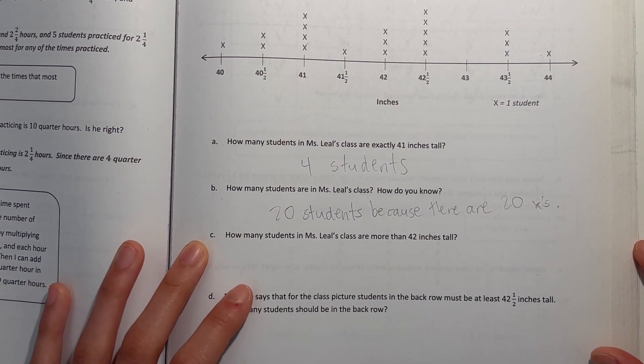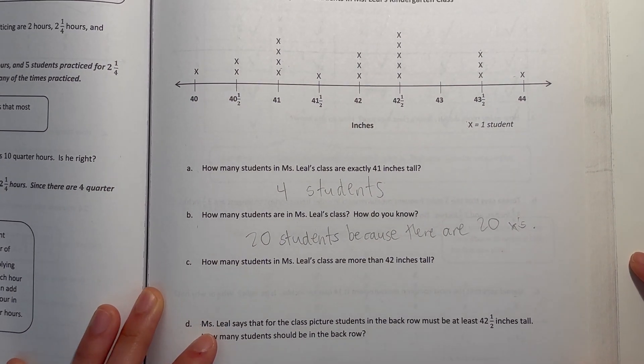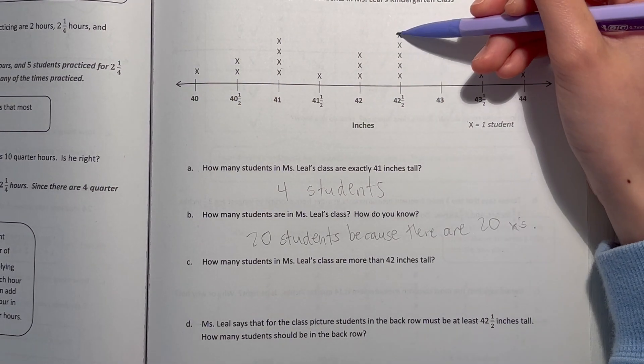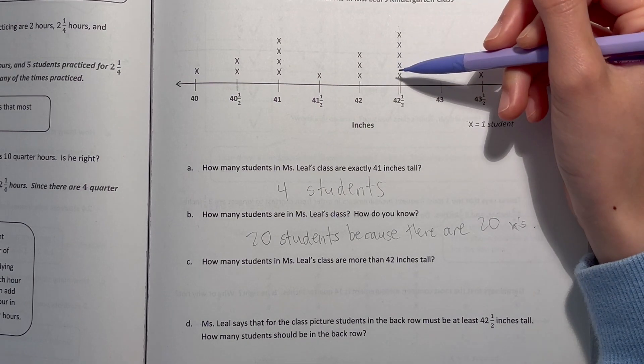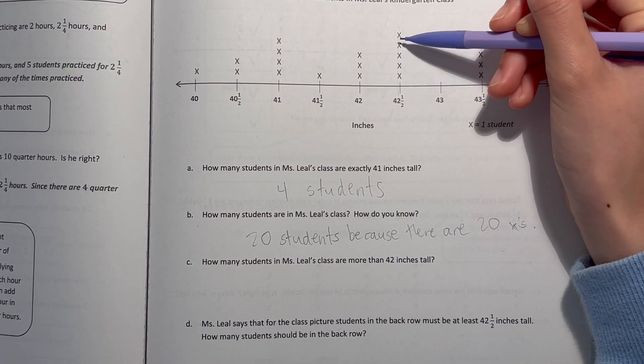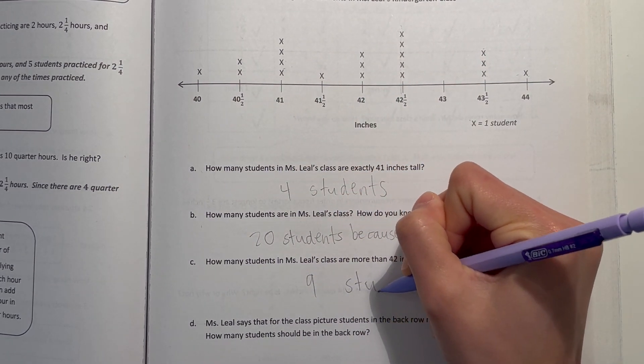Now see, how many students in Ms. Leal's class are more than 42 inches tall? So more than 42 is from 42 and 1 half over. That's 1, 2, 3, 4, 5, 6, 7, 8, 9. 9 students.